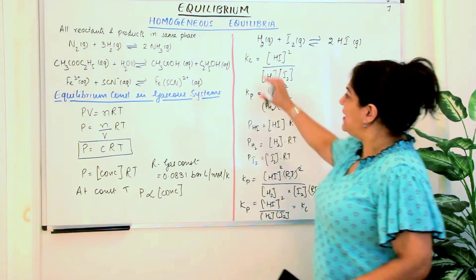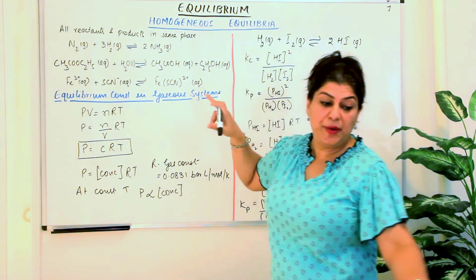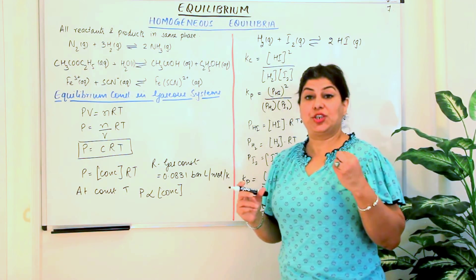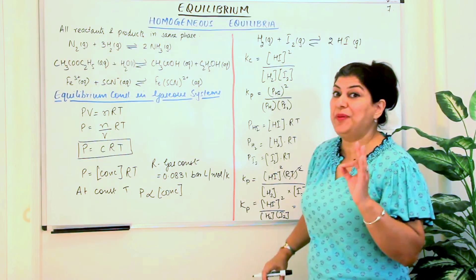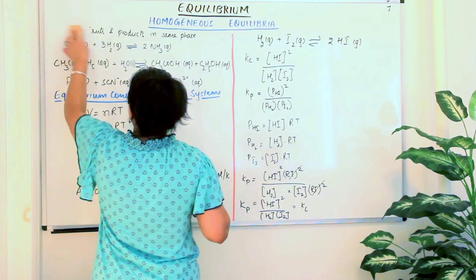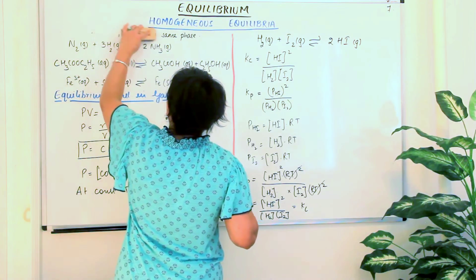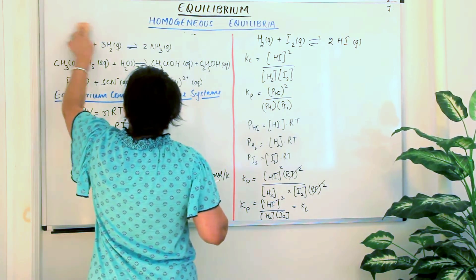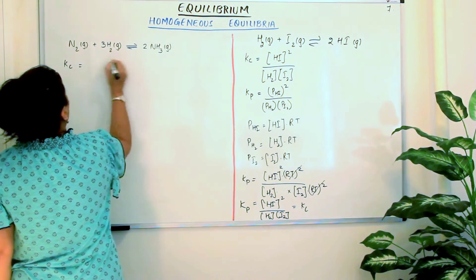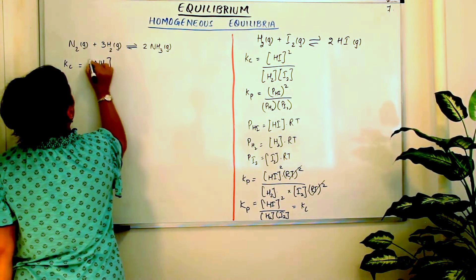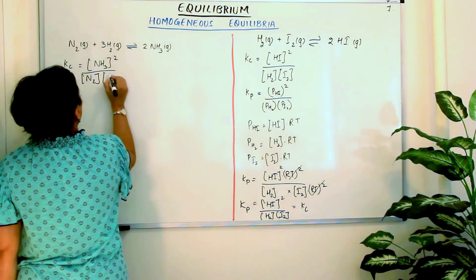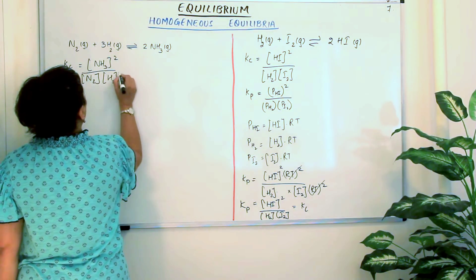There is a relationship between the equilibrium constant in terms of concentration and the equilibrium constant in terms of pressure, but KP is not always equal to KC. Let us take another example — the Haber's process: N₂(g) + 3H₂(g) ⇌ 2NH₃(g). KC in this case equals [NH₃]² divided by [N₂][H₂]³.